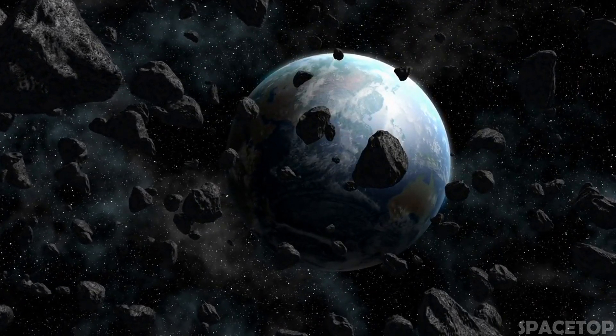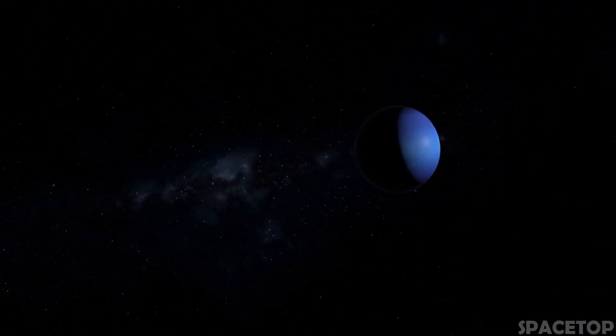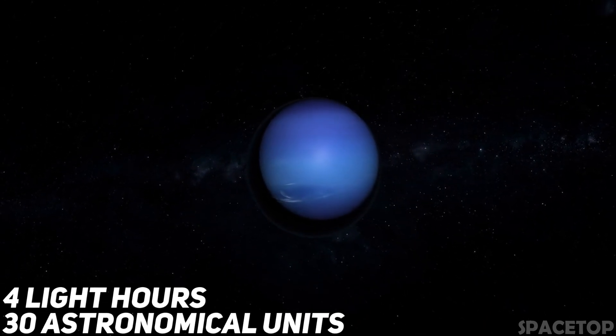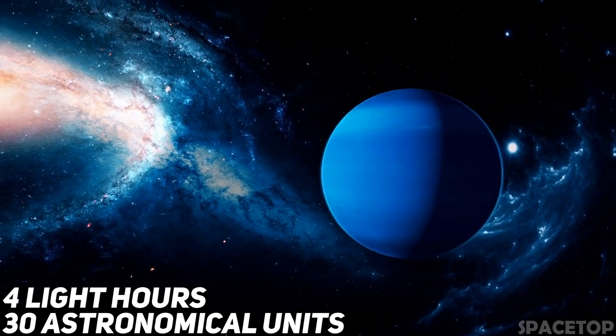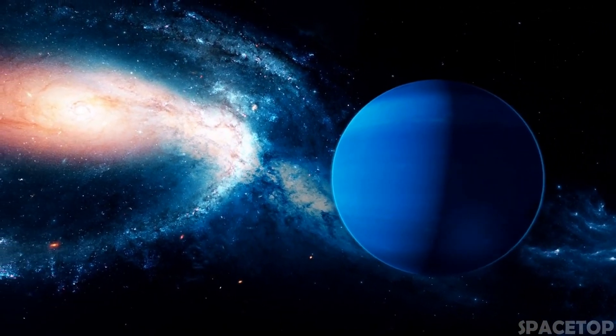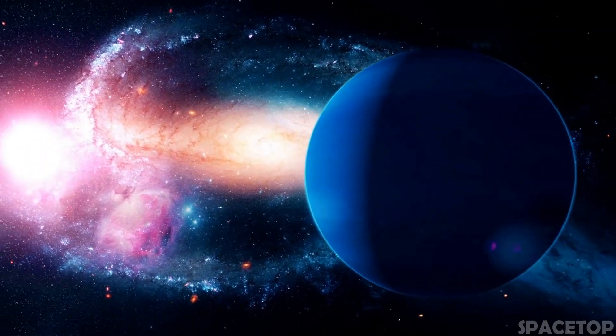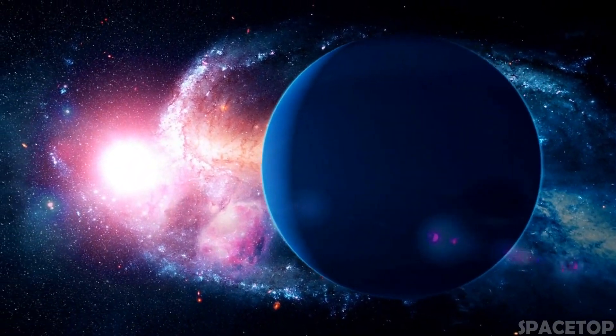The most distant planet in the solar system, at least as far as we know, is Neptune. Its radius is about 30 astronomical units, which is equivalent to about four light hours. Surprisingly, only a tiny part of the solar system is covered by the orbit of Neptune.